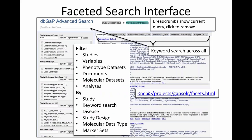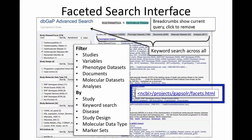This is what we might call a faceted search interface. There are filters on the right that let you filter studies, variables, phenotype datasets, documents, molecular datasets, and analyses by study, keyword, disease, study design, molecular data type, and marker sets. You can also do a keyword search across all of these different aspects of the data. While constructing your query, there is an SQL-type query formed at the top, and you can adjust it by clicking to remove elements.